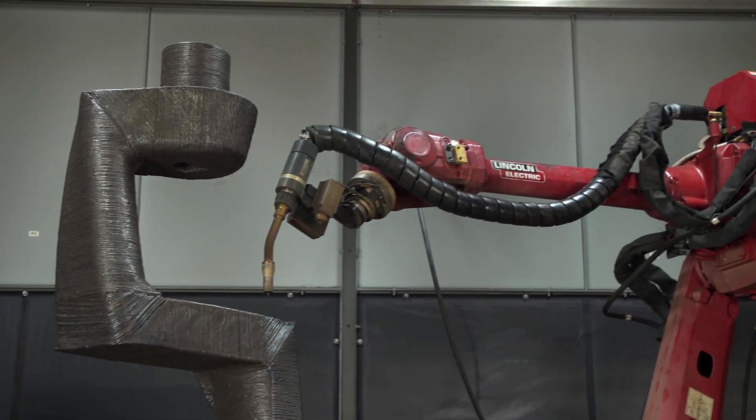It all starts with a quote to our customer based on a model of the intended print geometry as well as the desired material. Once we have an order we can use the model to create a build strategy and a path plan. Then we let the robot do the heavy work and actually print the part. After it's finished we can go through a few quality assurance checks and then we send the part out the door.